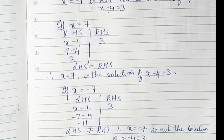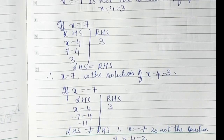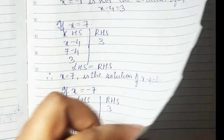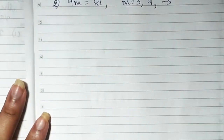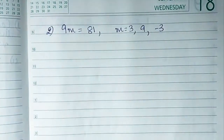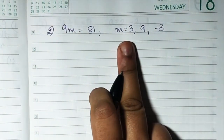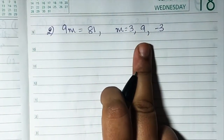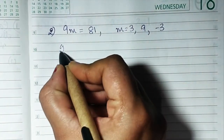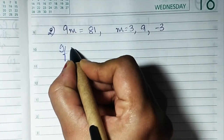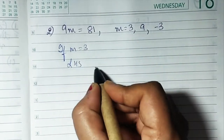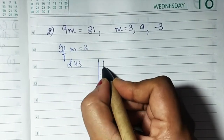So the solution is x = 7; x = -1 and x = -7 are not solutions. Now, sum number 2: the equation is 9M = 81, with values M = 3, 9, and -3. Let's check if M = 3 is a solution. Divide into LHS and RHS.